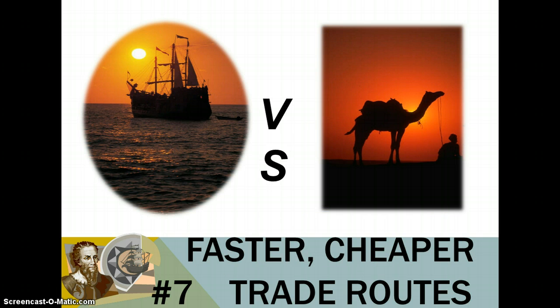The seventh and last motive is faster, cheaper trade routes. Looking at the pictures — a boat versus a camel — the boat moves faster because it's on water. They had to travel by camel through China and the Middle East to get goods, but with ships they could go faster and cheaper. They didn't have to pay tolls or go through certain countries; they could sail across the oceans and create trade routes to trade goods faster and cheaper.